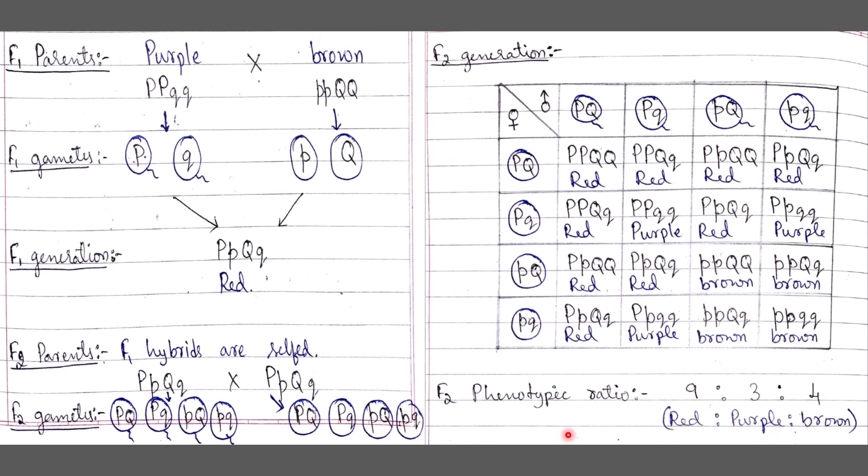To summarize the most important epistasis ratios: dominant epistasis will always have a 12:3:1 ratio, while recessive epistasis will always have a 9:3:4 ratio. That is about recessive epistasis.